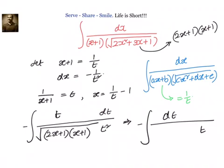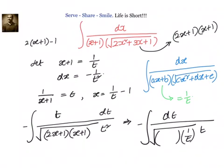2x plus 1 is equal to — let us put the square root now. What is 2x plus 1? We can write 2 into (x plus 1) minus 1, which is 2x plus 2 minus 1, that is 2x plus 1. Since x plus 1 equals 1 by t, we can write 2 by t minus 1. So we write down (2 by t minus 1) into (1 by t) into t.